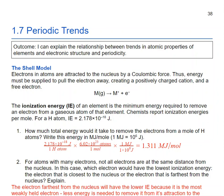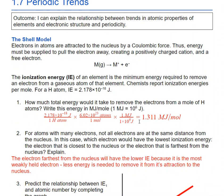Chemists report ionization energies per mole, and we want to convert this into megajoules per mole. I know that it's joules per one hydrogen atom, and then I multiply by the number of atoms in a mole. So that will give me joules per mole.